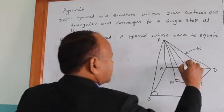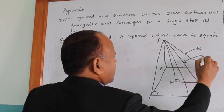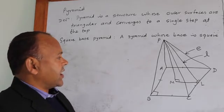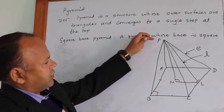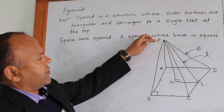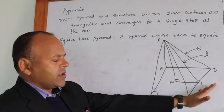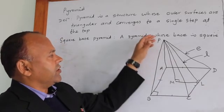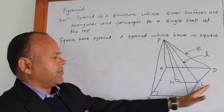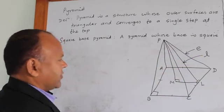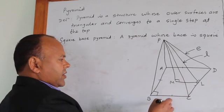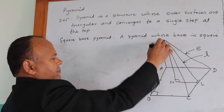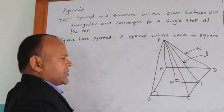P-E-L is the slanting height and it is denoted by L. The slanting height is the perpendicular drawn from the vertex of the pyramid to the side of the base. We may draw other slanting heights as well on the other sides — P-N, P-K, P-J can also be drawn. These are the slanting heights.